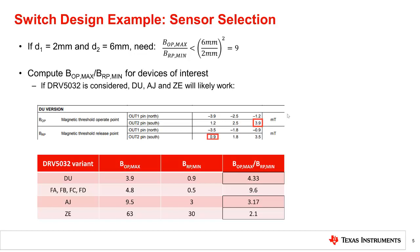Computing the ratio of switching thresholds for all existing DRV5032 variants, it is seen that only the DRV5032 DU, AJ, and ZE versions meet the sensor selection criterion. This means that it is possible to select a magnet that will cause the outputs of these devices to toggle at the required switching distances.